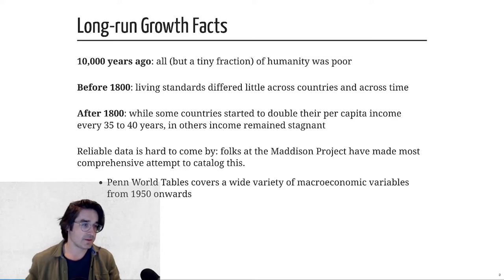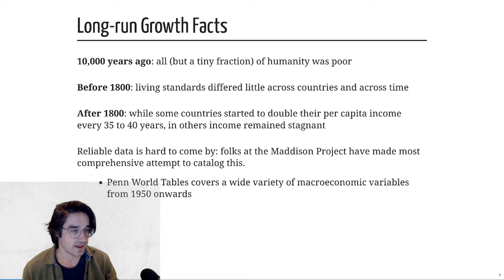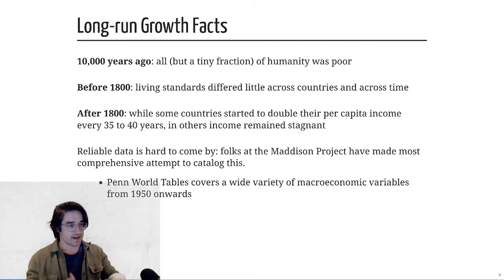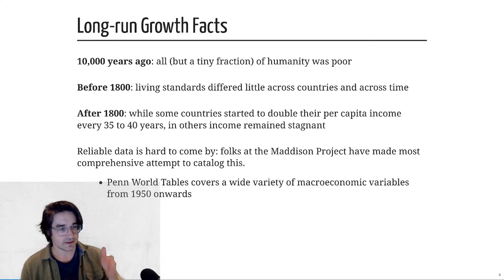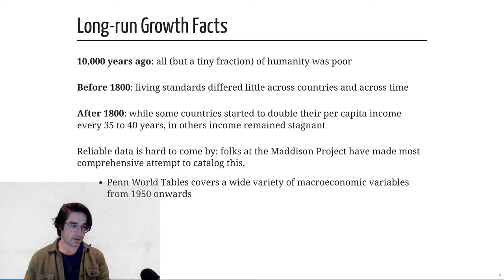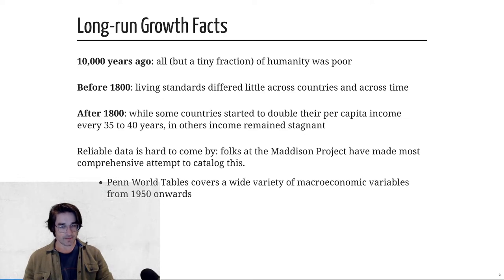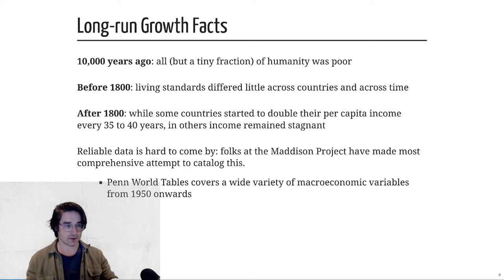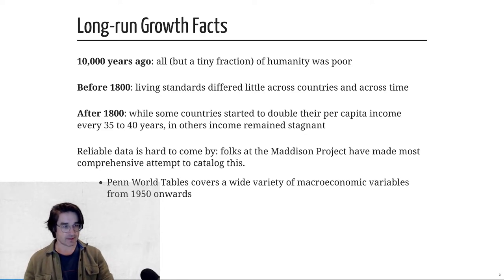The Maddison Project — I'll link it on the website — has a big spreadsheet of data going back to the year 1 AD and onwards. It's spotty in early periods, gets better around 1820 and onwards. They have both countries and world regions. Once you hit 1950, there's also the Penn World Tables, which focuses on the modern era after 1950 when we have much better data, and covers additional variables like trade, exports, imports, labor, capital income, and profits.